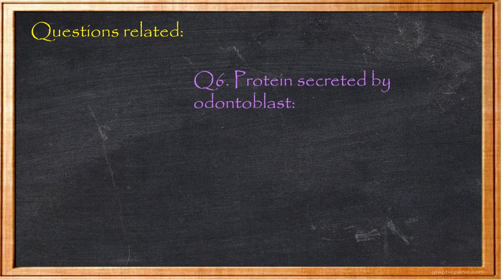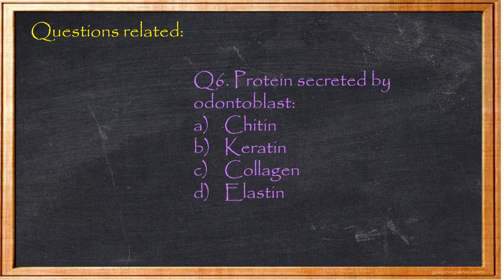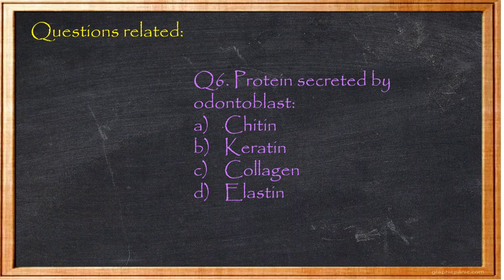Question 6: Protein secreted by odontoblast is — A) chitin, B) keratin, C) collagen, D) elastin. The dentine matrix is majorly secreted by odontoblasts in the form of collagen fibers; similarly, the pulp matrix is secreted by fibroblasts, also in the form of collagen. So odontoblasts secrete collagen protein. Answer: Option C, collagen.